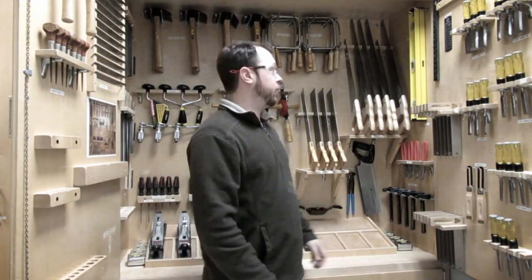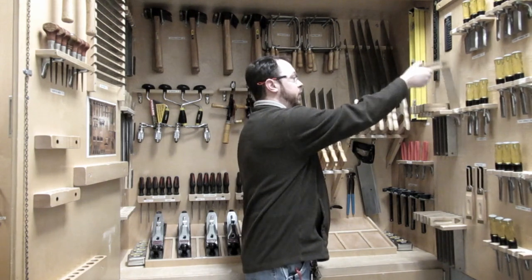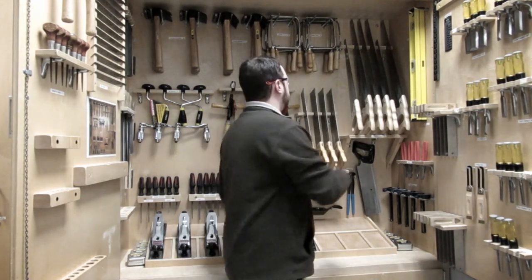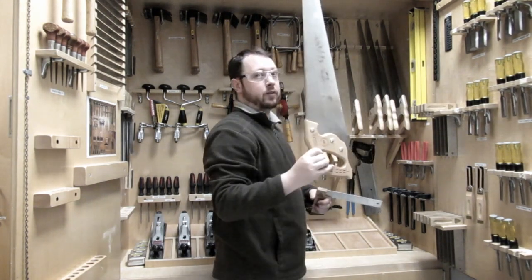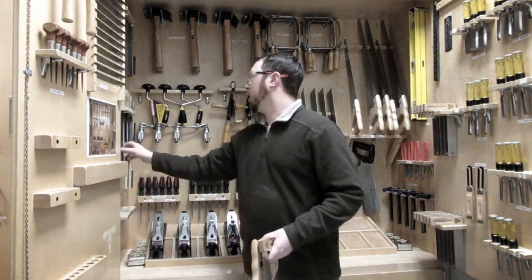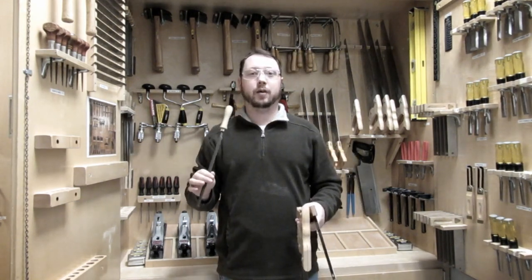All right, to get started, send someone from each table back to our tool cabinet. What you're going to need per group: one tri-square, one crosscut saw, and one file. Take these back to your table.